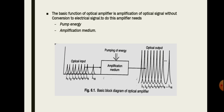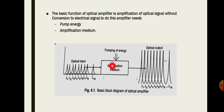In the basic block diagram of the optical amplifier, pump energy is provided along with the optical input signal. The amplification medium is the structure of the amplifier — the P-N junction acts as the amplification medium. The depletion region formed at the P-N junction acts as the active region. Pump energy is provided by positively biasing the P-N junction, which increases the electron concentration.